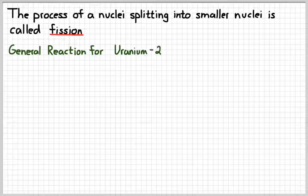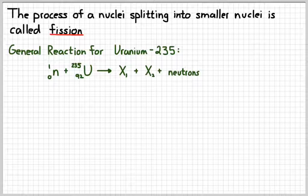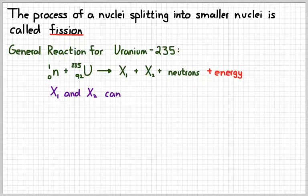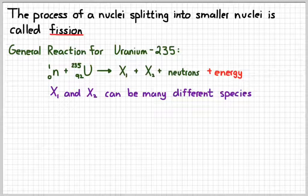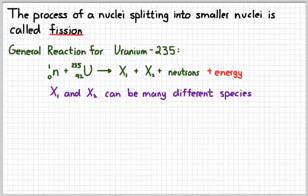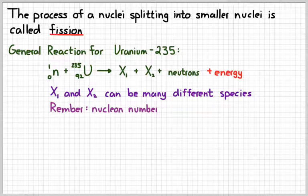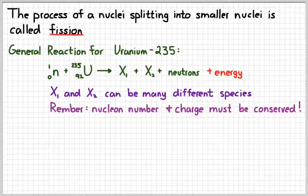So a general reaction for uranium-235 might look something like this. A neutron plus uranium-235 gives you two smaller nuclei, X1 and X2, plus some extra neutrons, plus a ton of energy, which is the whole idea here. Again, those two daughter nuclei can be many different things. They're probably not going to be the same thing, as it turns out. But usually one will have about 60% of the mass, the other will have about 40% of the mass. All that we really need to remember is that we have to conserve the nucleon number and the charge in any nuclear process. So if we knew what one of those species is, then we should be able to figure out what the other one is.